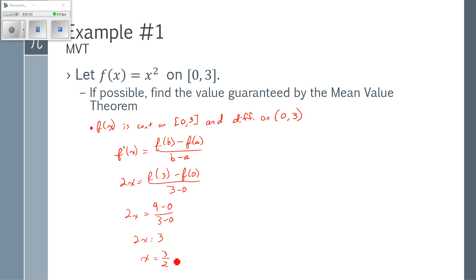And just a quick check, 3 halves is in my interval from 0 to 3. And so there is the value where x squared has the exact same slope as the slope of the secant from 0 to 3 for that function.